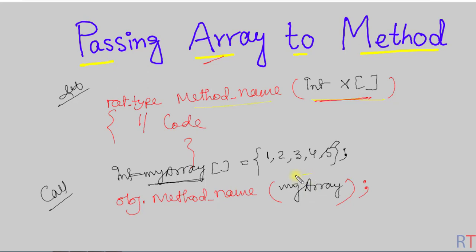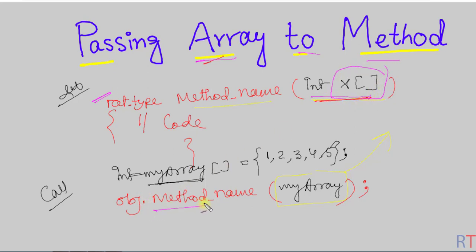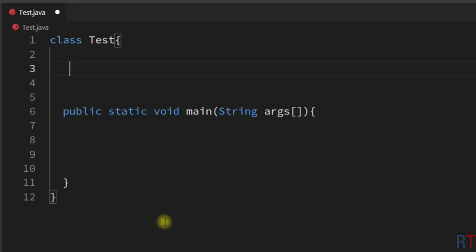So to pass an array to a method, first we have to define the method so that it will receive one array as an argument, and then while calling the method we use the name of the array to pass it as an argument.